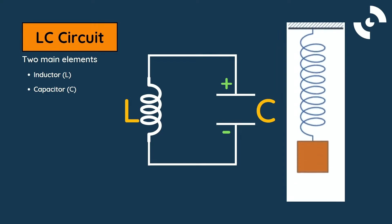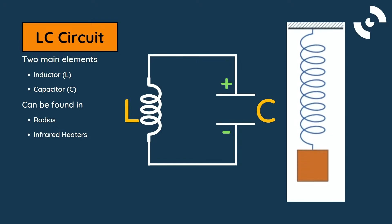Due to their simplicity, LC circuits are often used in applications that involve generating sinusoidal signals like radios and infrared heating devices.